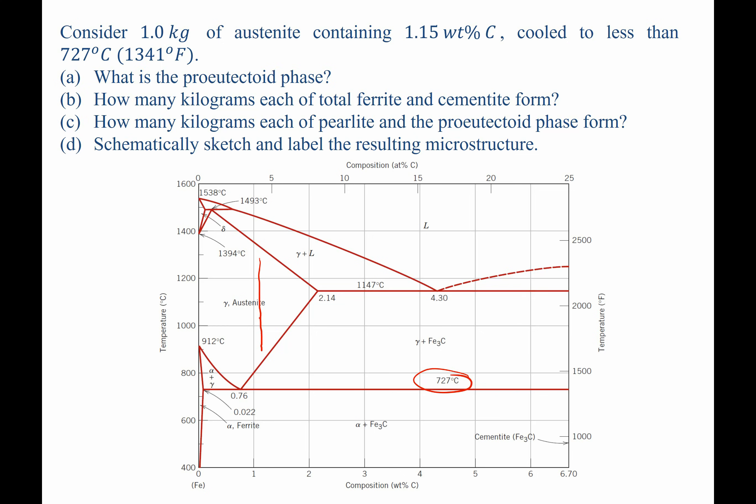What is the pro-eutectoid phase? How many kilograms each of total ferrite and cementite form? How many kilograms each of pearlite and pro-eutectoid phase form? And lastly, can we sketch the resulting microstructure? So let's begin with the first one.